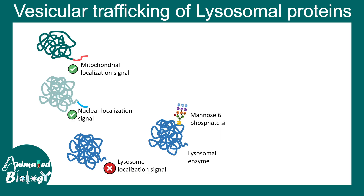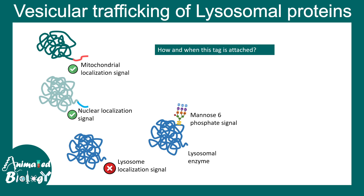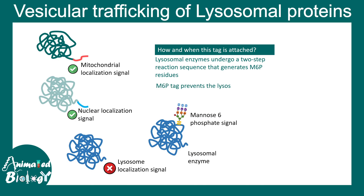Instead, lysosomal proteins undergo a modification known as the mannose-6-phosphate tag. This tag marks them for delivery into the lysosome. This tag is attached at the trans-Golgi by enzymes which put this tag and make the proteins go to the lysosome. The mannose-6-phosphate tag prevents these proteins from being secreted outside the cell, because many of them are acid hydrolases that could damage the extracellular environment. So targeting and delivering lysosomal enzymes is a really crucial quality control step inside the cell.